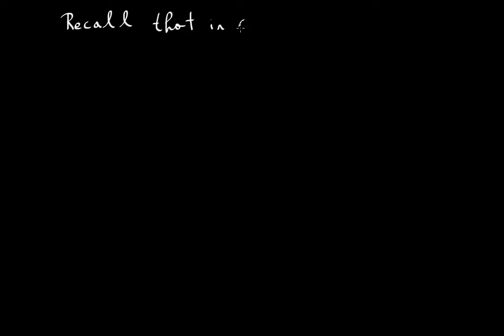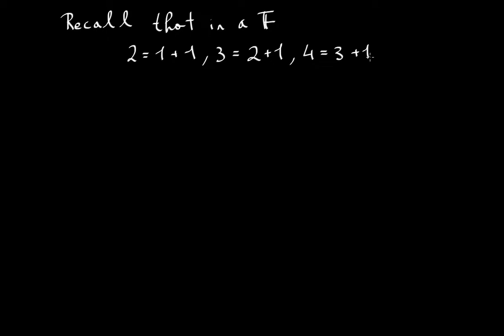Recall that in a field, 2 is defined to be 1 plus 1, and 3 is defined to be 2 plus 1, and then 4 is defined as 3 plus 1, and so on. So we can basically say that the naturals are a subset of any field.